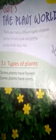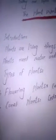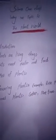Flowers and plants. I will give you an example of this type of flowering plants. The rose plant will be a flowering plant.